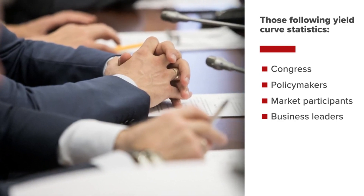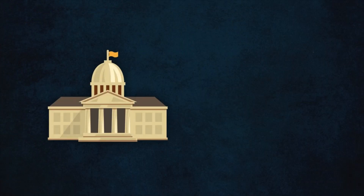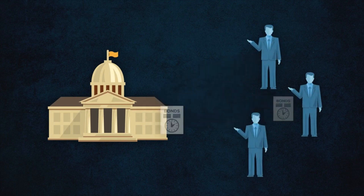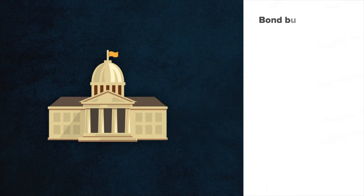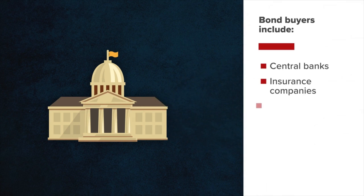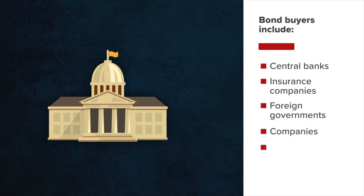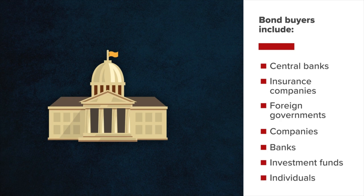When the U.S. government needs funds to cover expenses, selling Treasury bonds at auctions is a way to raise cash. The buyers of Treasury bonds receive interest payments. Buyers include central banks, insurance companies, foreign governments, companies, banks, investment funds, individuals, etc.